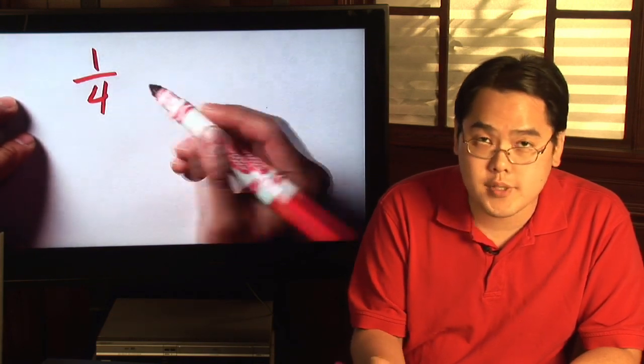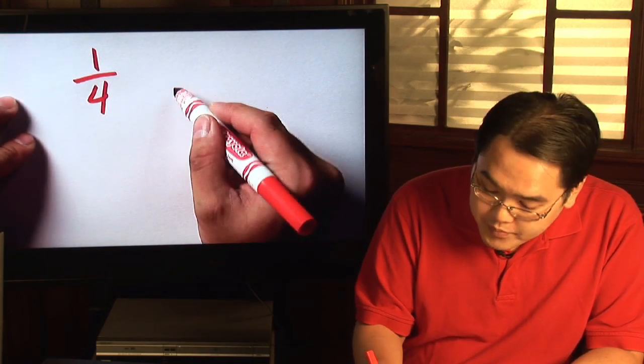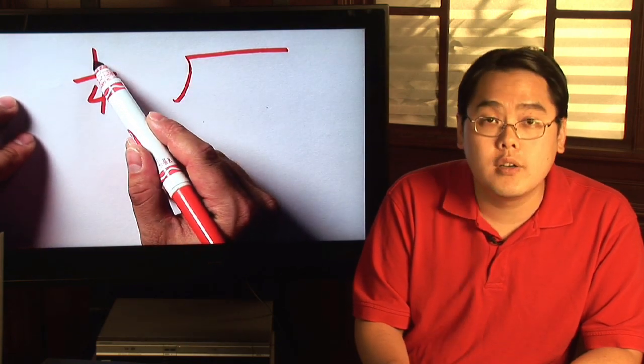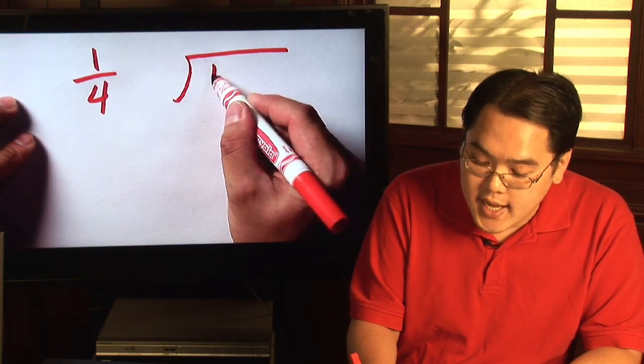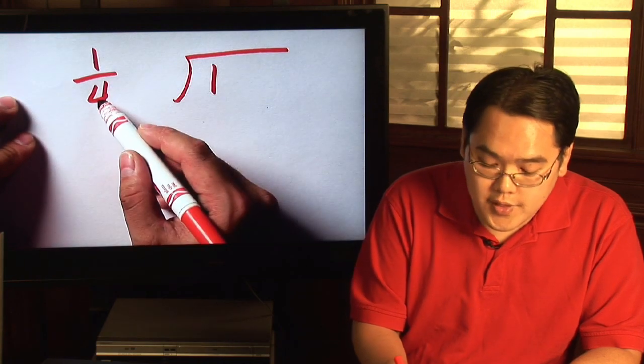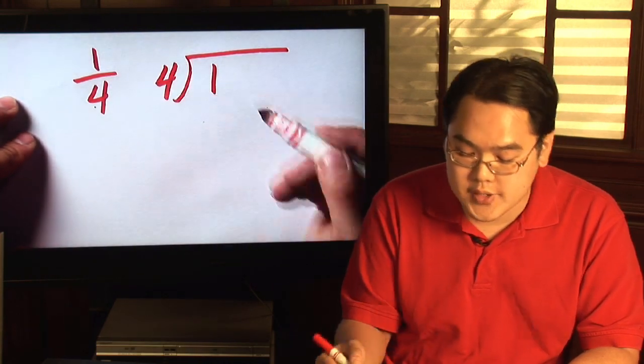This really becomes a long division exercise because the numerator is always going to be on the inside of the division and the denominator, which is the four here, is always going to go on the outside.